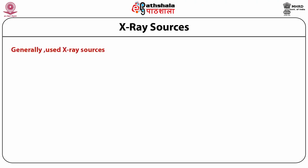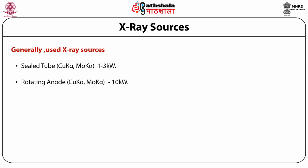Generally used X-ray sources include: the sealed tube using copper K-alpha or molybdenum K-alpha, which generates 1 to 3 kilowatts of power; the rotating anode using copper K-alpha or molybdenum K-alpha, generating about 10 kilowatts; rotating anode plus focusing mirrors; and the micro source, which generates about 30 watts.